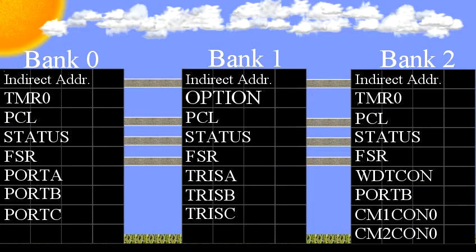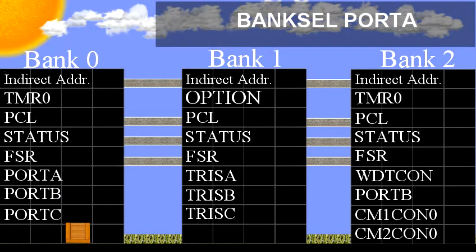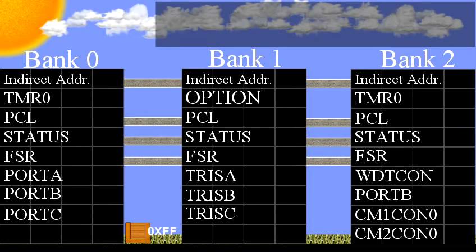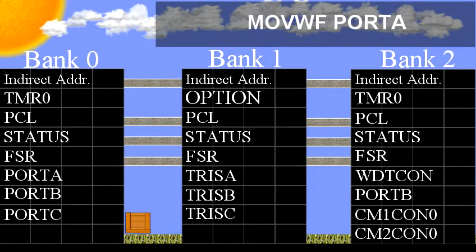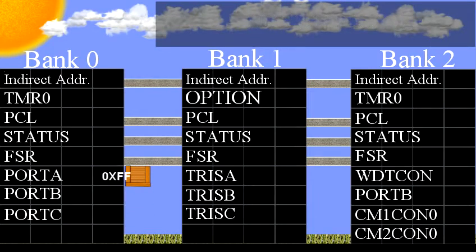So let's say we have to put some data into the Port A register so that the data will appear on the input-output pins of Port A. First, we need to issue the command bank select Port A. This tells the CPU to change the currently active bank to the bank that contains Port A. Next, we need to move the data we want to put on Port A into the working register. For this example, we'll move a literal value into W, so the command MOVLW 0xFF will copy the value FF — that's 255 in decimal — into the working register.